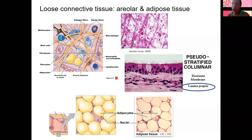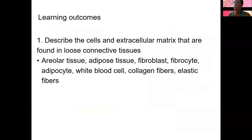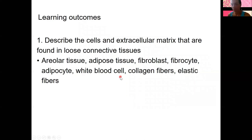Those are our two loose connective tissues. We've described the cells and extracellular matrix found in loose connective tissues. The extracellular matrix of adipose cells is fairly fluid — there's not a lot of extracellular proteins, some extracellular fluid — loose. So the cell types include fibroblasts, fibrocytes, adipocytes, and white blood cells generally. The fibers include collagen fibers and elastic fibers.